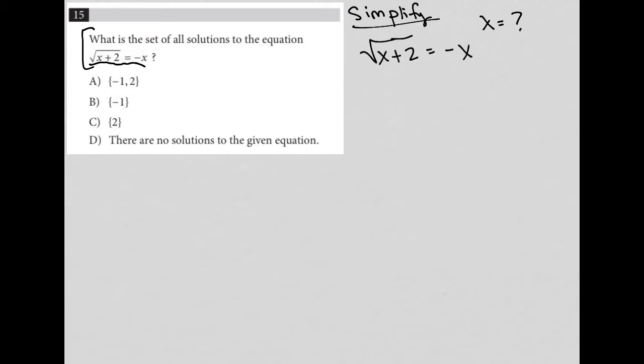A great strategy to use here is plug-in answers, PIA. I'm going to use that by going through each option and plugging those answer values in for x.